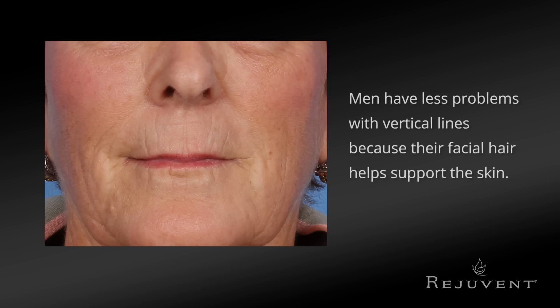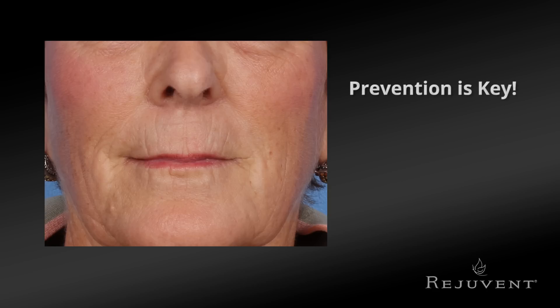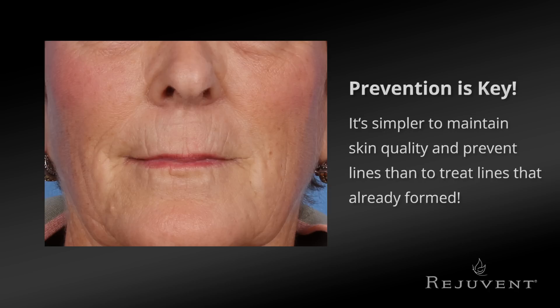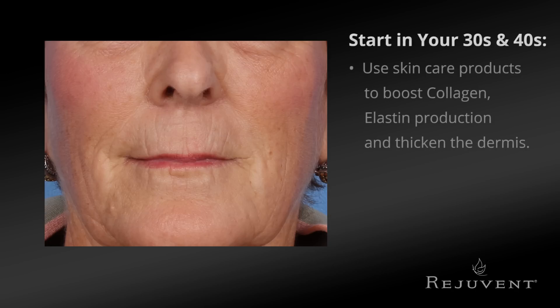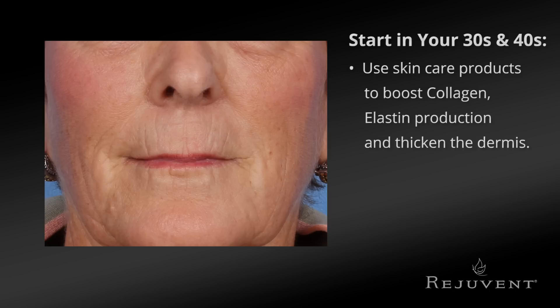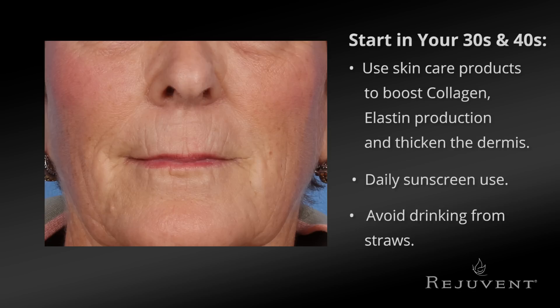Men have less of a problem with vertical lines on their upper lip with age because of the whiskers that help support the skin. As is true for many things in life, an ounce of prevention is worth a pound of cure. It's much simpler to maintain the quality of the skin and prevent the formation of lines than to treat them once formed. Skin care products that boost collagen and elastin, daily use of sunscreen, and avoidance of drinking from straws — when started in the late 30s and 40s — can really delay the onset of these upper lip lines that typically develop in the 50s and 60s.